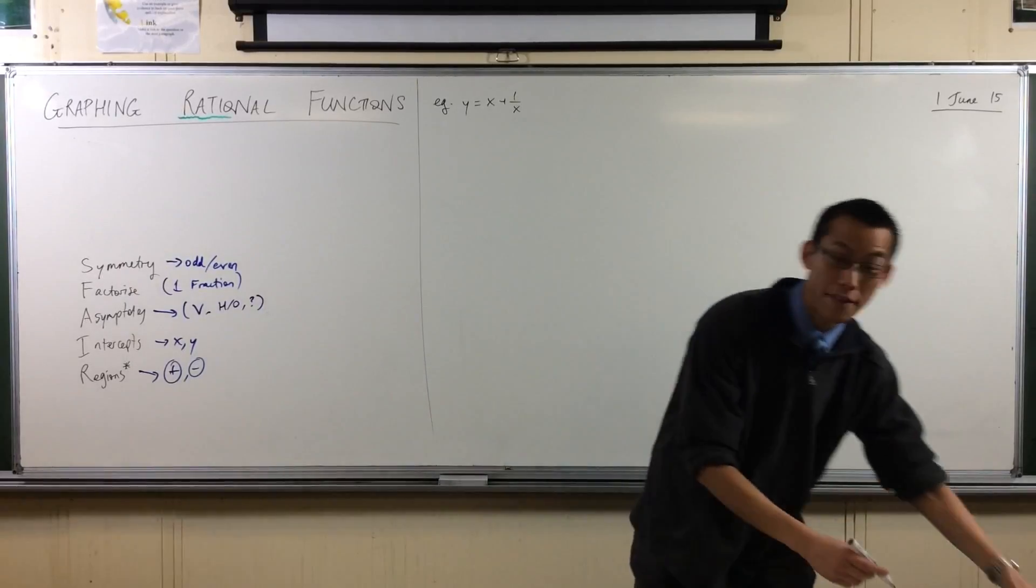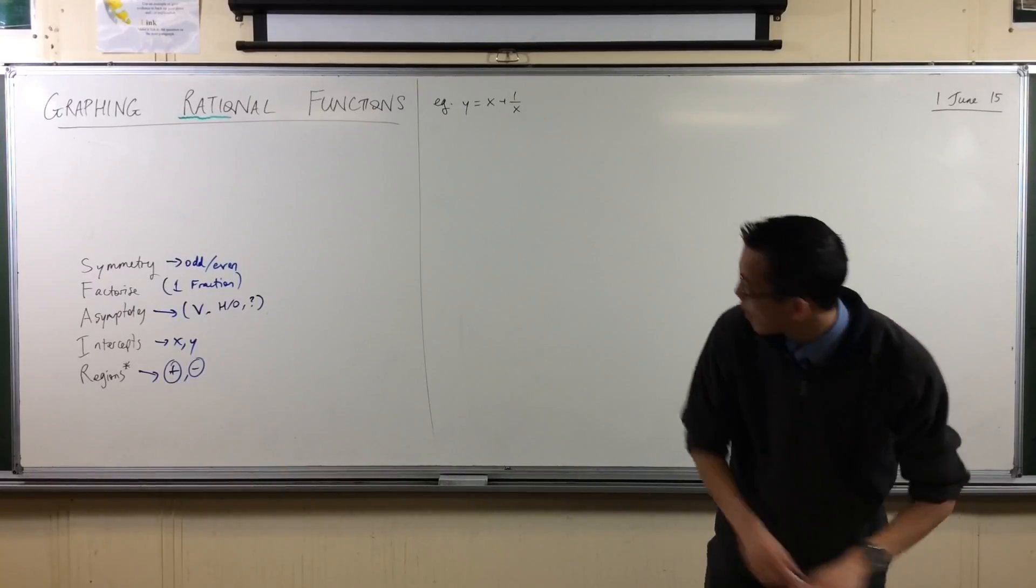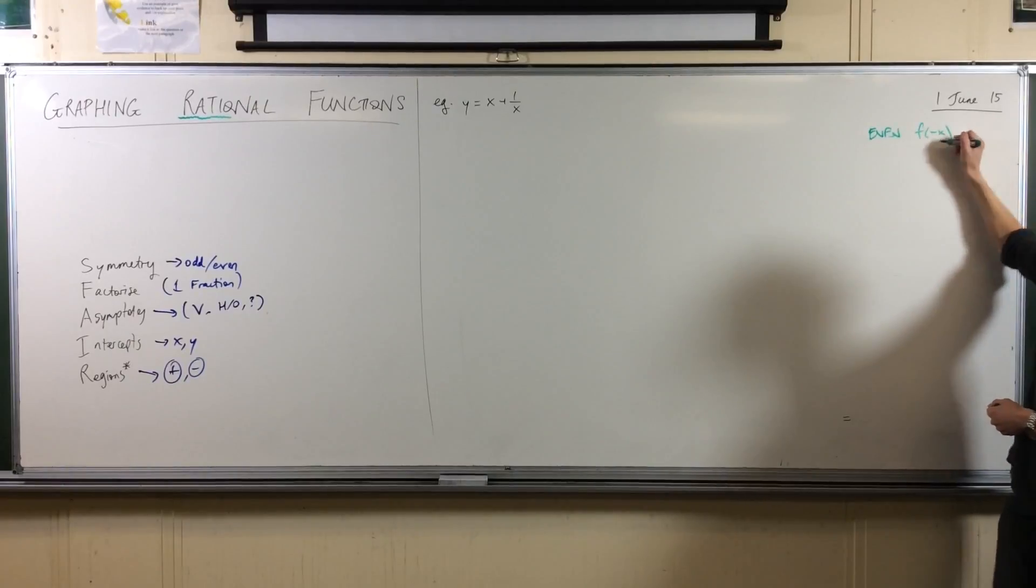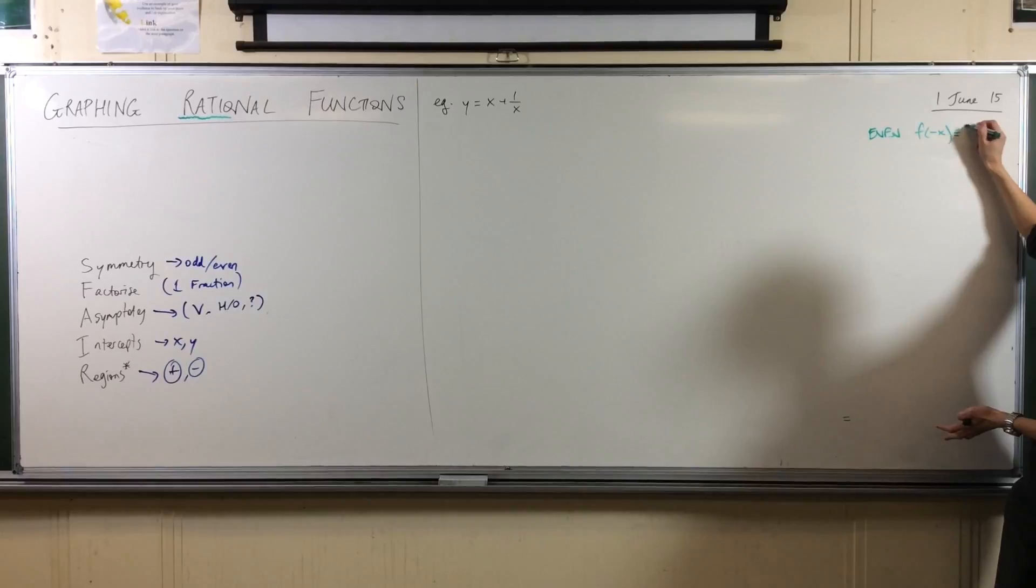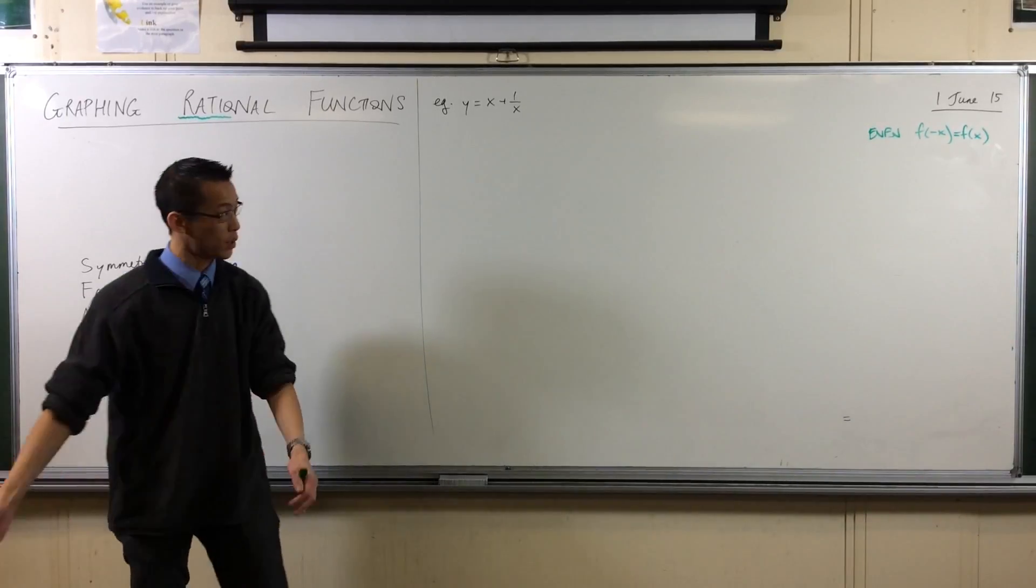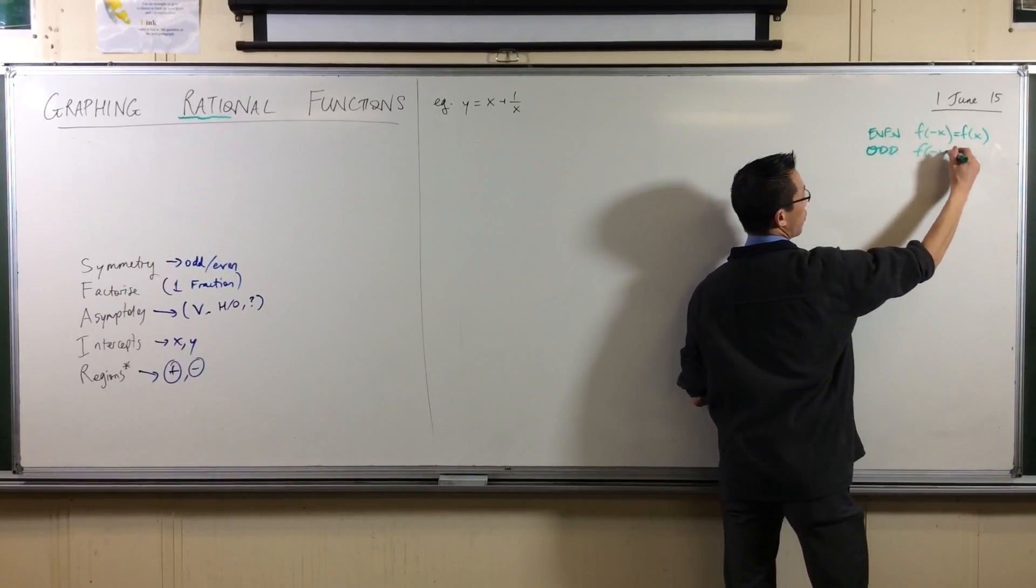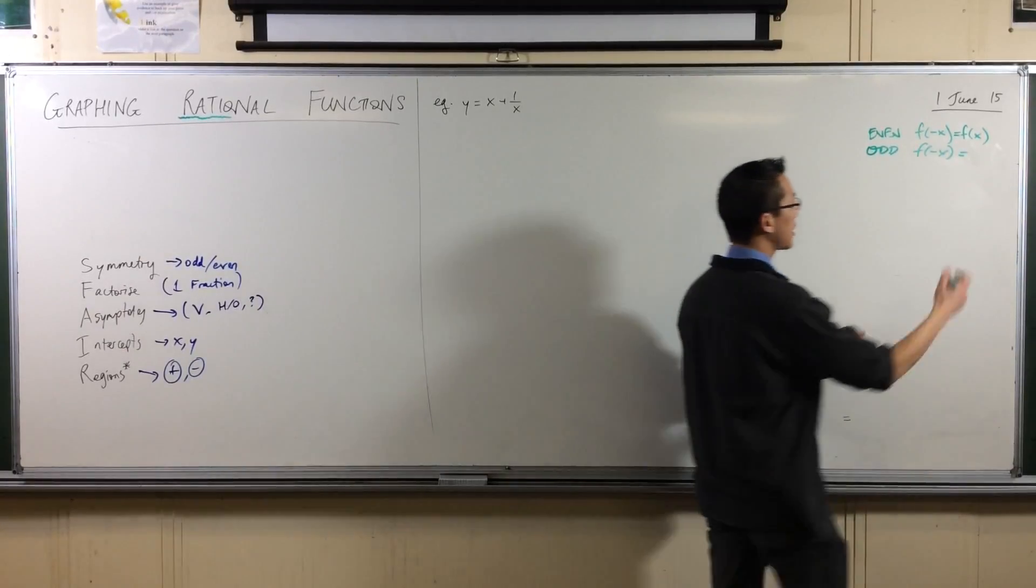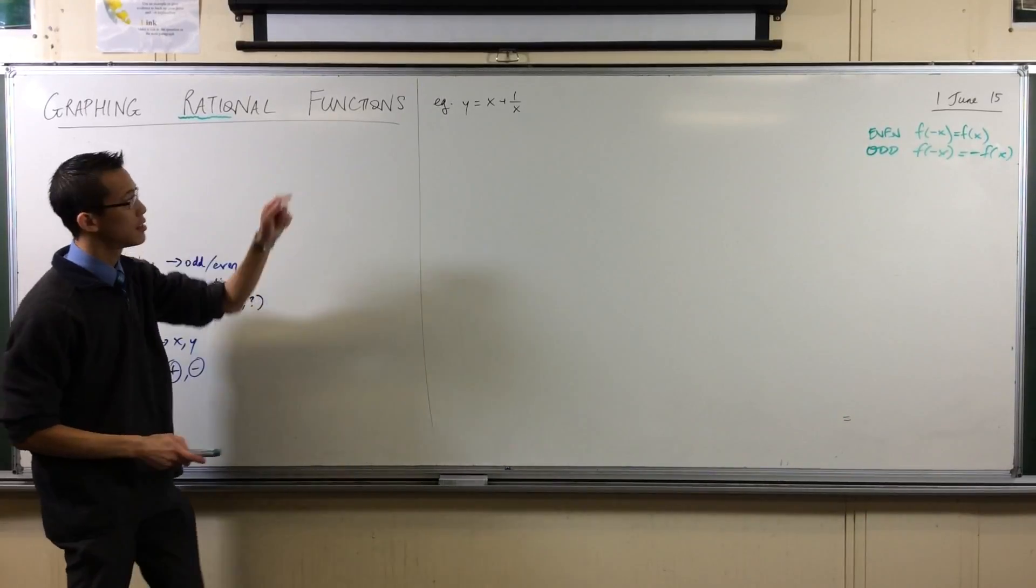Okay, so remember what the definitions of odd and even functions are. Here's even symmetry. Even is if you put in a negative value, it doesn't matter. What you get back is the same as if you put in a positive value. X squared, that's a typical even function. An odd function is almost identical, except when you put in the negative value, what do you get at the other end? You're going to get the flipped over version of that.